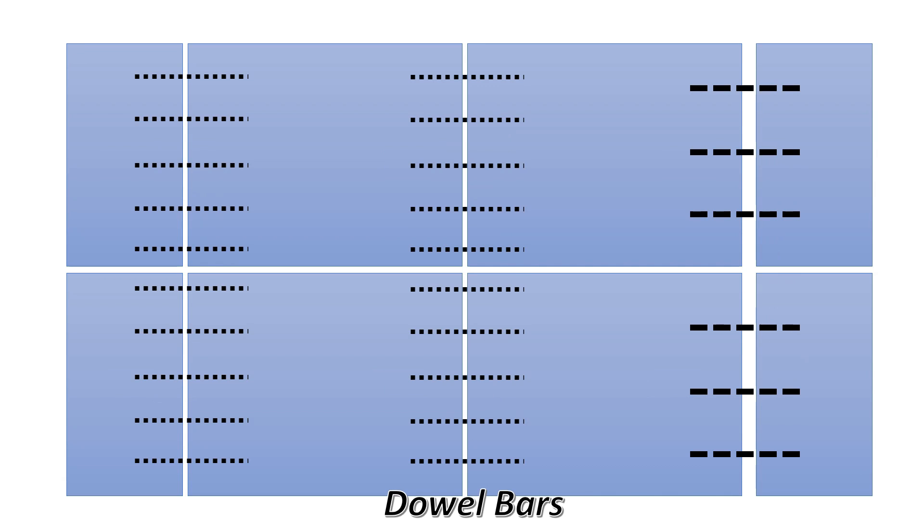At last, we will see its methods of construction. The first is alternate bay method. In this method, bays or slabs are constructed in alternate successions leaving the intermediate bays as shown here. These intermediate bays are constructed after a gap of at least one week if ordinary Portland cement is used and two days in case when rapid hardening cement is used. This pavement is practicable and found useful when the proposed width of the pavement is more than 4.5 meters.